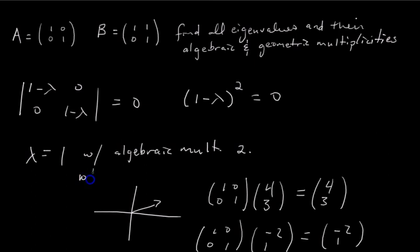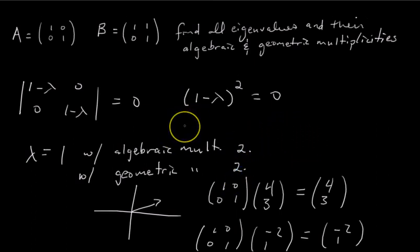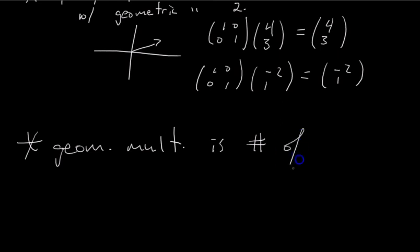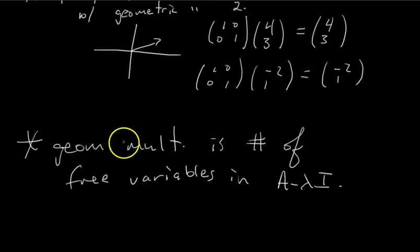And so now we can add that with geometric multiplicity 2 as well. Now, buckle in, here's the shortcut. Here we go. Geometric multiplicity is the number of free variables in A minus lambda I.